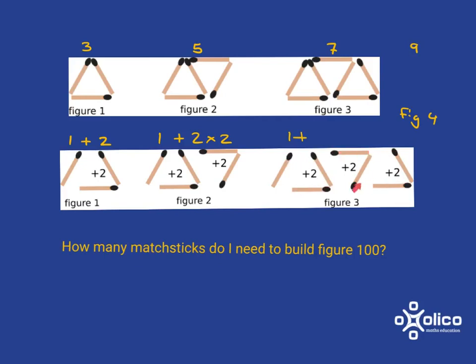If I were to imagine figure 4, I would still have that 1 matchstick which I've put in here already, but then in this case I would be adding on 1, 2, 3, and then another one, 4 lots of 2, so it would be 4 times 2.